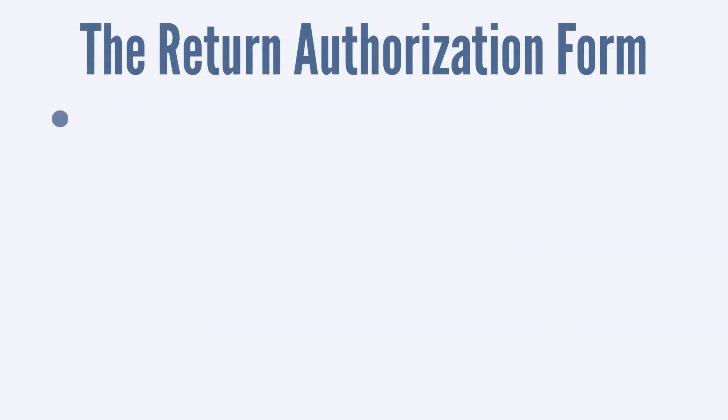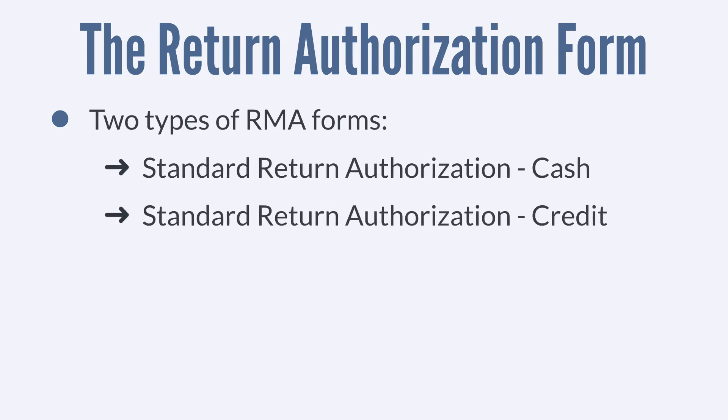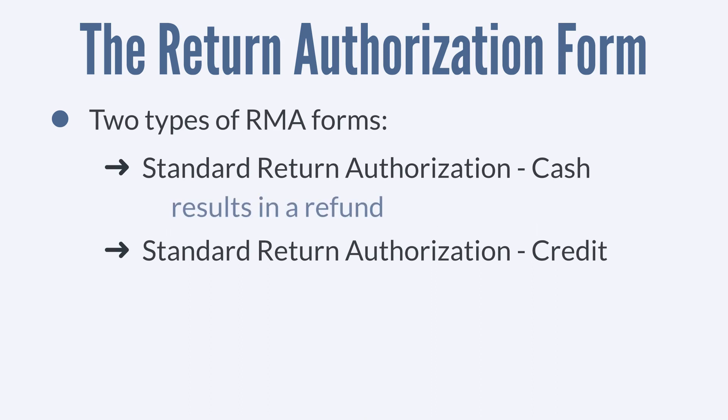There are two types of return authorization forms: standard return authorization cash and standard return authorization credit. Having two separate types of the same form allows you to differentiate between returns that will result directly in a refund and returns that will result in a credit memo. We'll look at each of these situations in more detail.